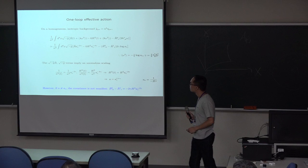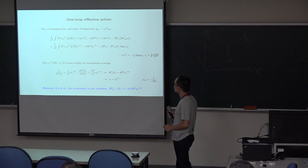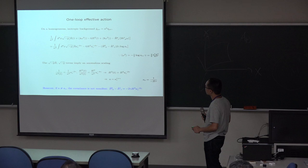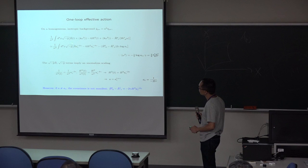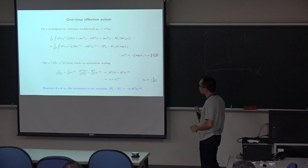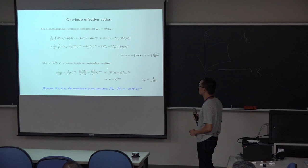The effective action at the one-loop level in the homogeneous isotropic background is given by this expression. The important point is the three terms: the Einstein-Hilbert term, the cosmological constant term, and the new term, which is proportional to the traceless part of the Ricci tensor.